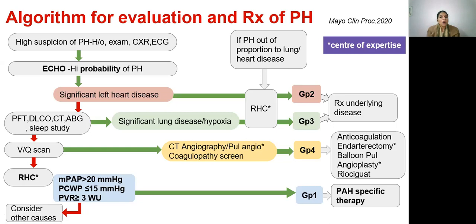If all three common groups are excluded, proceed to do a right heart catheterization. If the hemodynamic parameters mentioned previously are fulfilled, then group 1 or pulmonary arterial hypertension is diagnosed. We need not be very rigid with this flowchart — if a patient has a high risk of pulmonary arterial hypertension, such as hereditary PAH or limited scleroderma, they can be directly referred for right heart catheterization. Group 1 is where PAH-specific therapy is indicated.